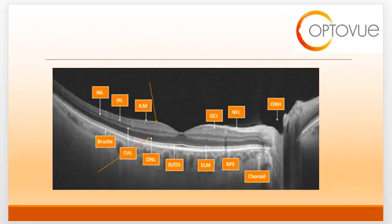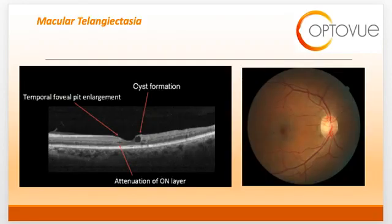Macular telangiectasia has the propensity to affect both the inner and outer retina, including the choroid. Thus, there are multiple orange arrows on this OCT indicating the broad scope of potential involvement with this disease. Macular telangiectasia, or idiopathic juxtafoveal telangiectasia type 2, is a bilateral disease of unknown cause with characteristic alterations of the macular capillary network.